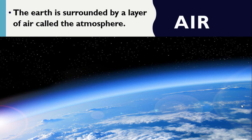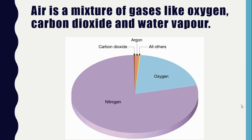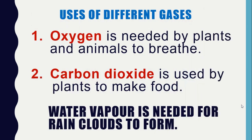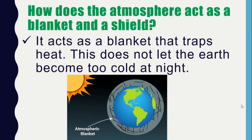The Earth is surrounded by a layer of air called the atmosphere. Air is a mixture of gases. There is a mixture of gases like oxygen, carbon dioxide, and water vapor. Let us learn the uses of different gases. First, oxygen — it is needed by plants and animals to breathe. Second, carbon dioxide — it is used by plants to make food. Water vapor is needed for rain clouds to form.